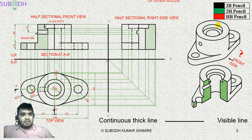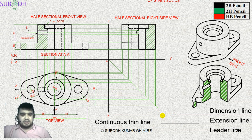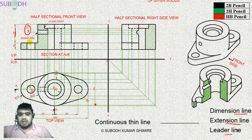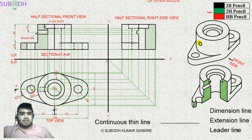The continuous thick line is for visible lines. The continuous thin line is used for dimension lines and extension lines — it is also used for the middle line. The thickness depends on the dimension. A thin line drawn with a 2H pencil is appropriate for these purposes.